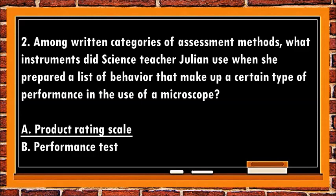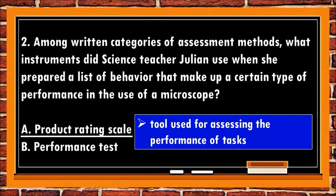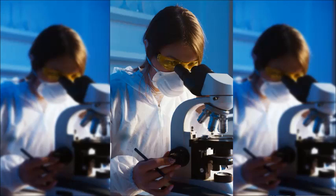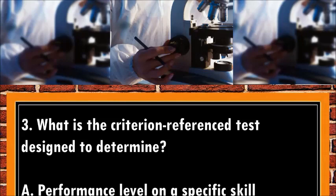The correct answer is a. Product Rating Scale. A rating scale is a tool used for assessing the performance of tasks, skill levels, procedures, processes, qualities, quantities, or end products such as reports, drawings, and computer programs. In the given situation, the rating scale is the list of behavior comprised of the use of a microscope.